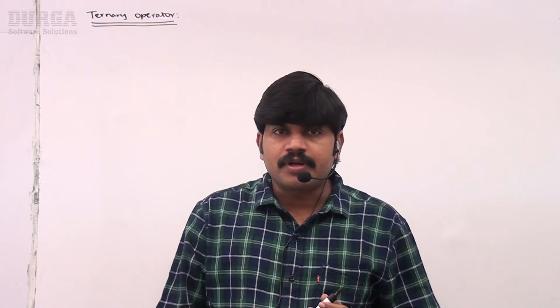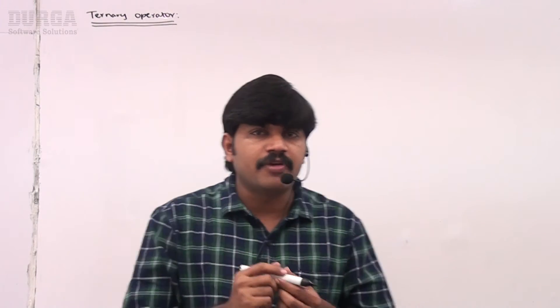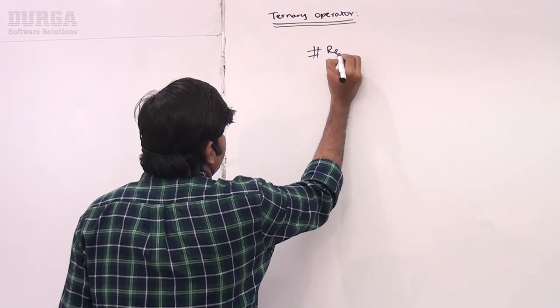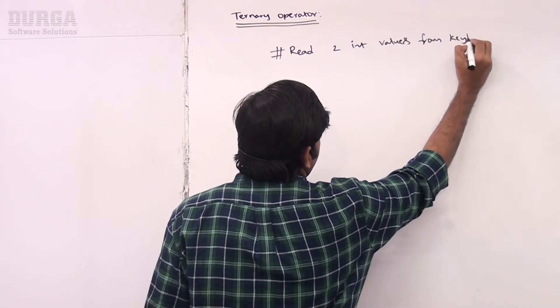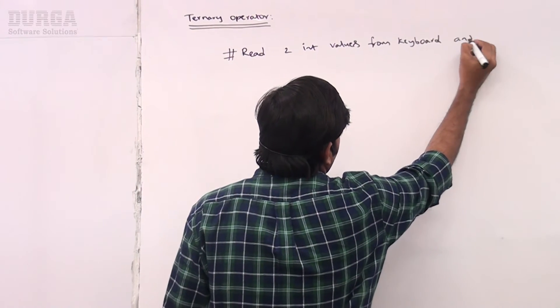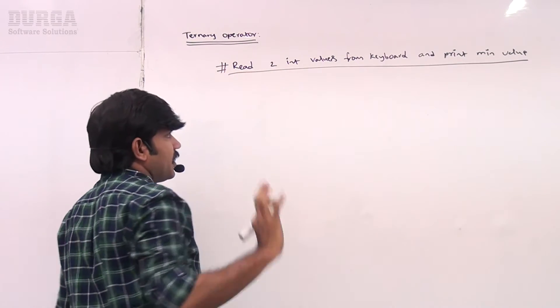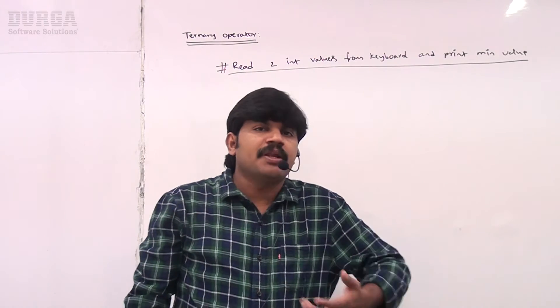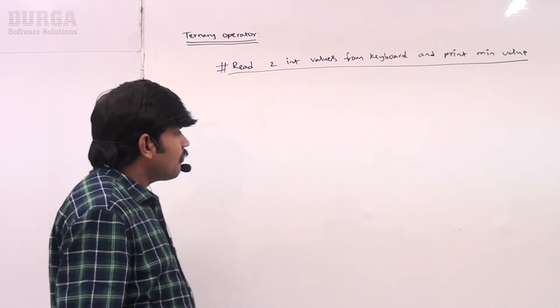Now let me go for another small example. Write a Python program to read two integer values from the keyboard and print the minimum value using the ternary operator. So our requirement is: read two integer values from the keyboard and print the minimum value using the ternary operator.